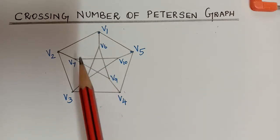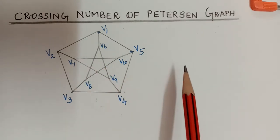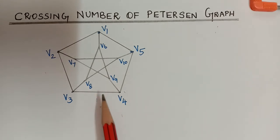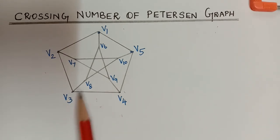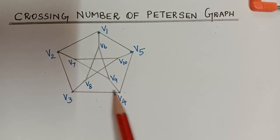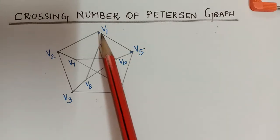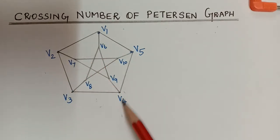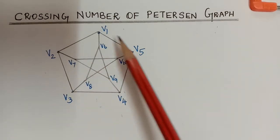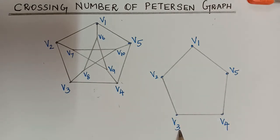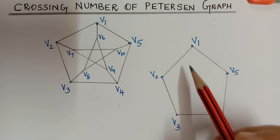First, what we shall do is draw the outer cycle — that is the cycle v1, v2, v3, v4, v5, v1. After drawing the outer cycle, we shall draw the part of the graph that is inside it.